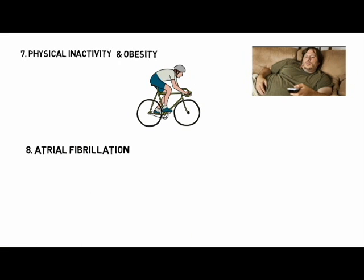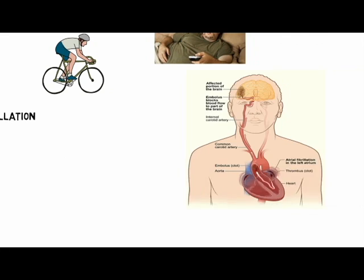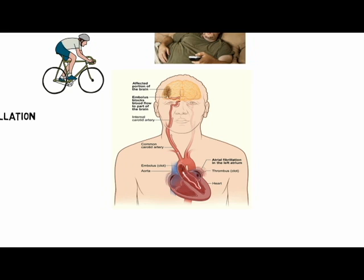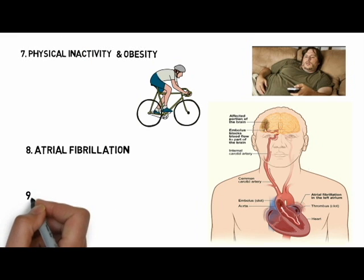Eighth, atrial fibrillation. People with atrial fibrillation — a particular type of irregular heartbeat — are at increased risk of ischemic stroke. The inefficient pumping of the atria allows blood to stagnate and ultimately form clots. Parts of these clots may then break off, travel in the blood to the brain, and block an artery, causing a stroke.